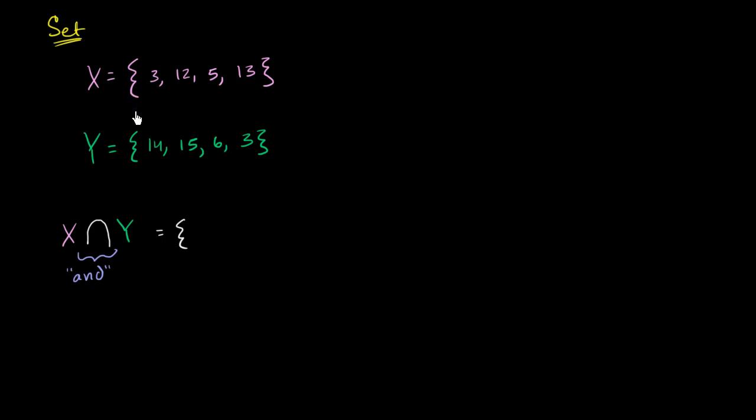So all of the things that are in X and in Y. So what are those things going to be? Let's look at both sets X and Y. So the number 3 is in set X. Is it in set Y as well? Sure, it's in both, so it will be in the intersection of X and Y. Now the number 12, that's in set X, but it isn't in set Y. So we're not going to include that.